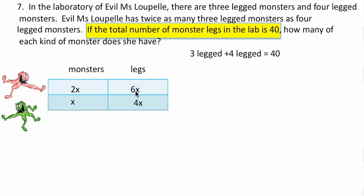Well, the three-legged monster legs, 6x. So that's 6x. And the four-legged monsters' legs are 4x. 6x plus 4x equals 40. That's your equation. It's a very easy equation.